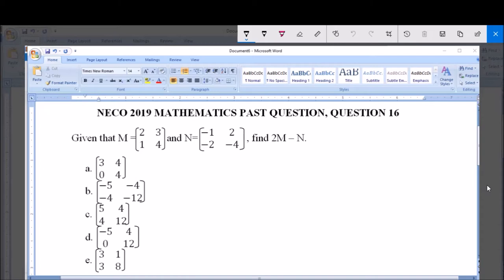Given that M is a matrix, that's a 2x2 matrix: 2, 1, 3, 4, and N also a 2x2 matrix: minus 1, minus 2, 2, and minus 4. Find 2M minus N.